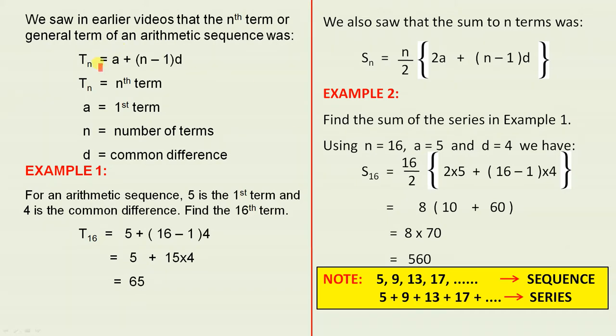So all we do, we make n equals 16 here and we substitute a, n and d into the equation. And that gives us the first line here. Simplification takes us to the second line.